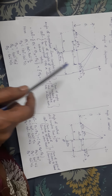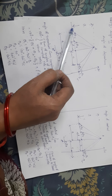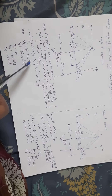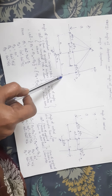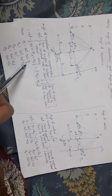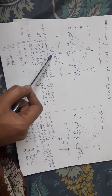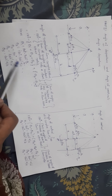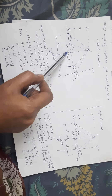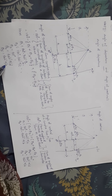So theta 1 is 180 degrees minus tan inverse A by B. Theta 2 is 180 degrees minus tan inverse A by C. Theta 3 is a straight line, so it is 90 degrees. And theta 4 is tan inverse A by E.